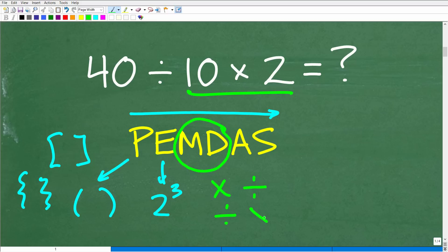But if we have division, then multiplication, we see division first. Okay. So we're going to do this. So this is why we need to do this part of the problem first.